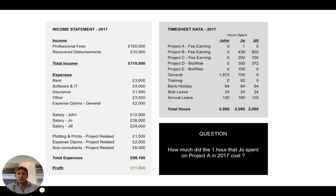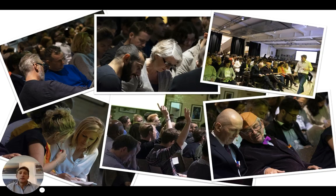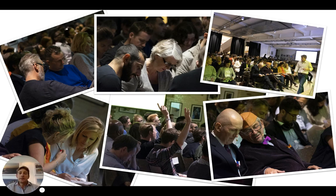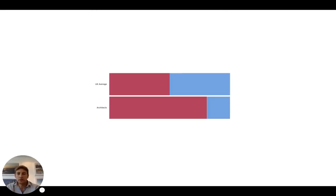The question was asked: how much did the one hour that Jo spent on Project A cost in 2017? The crowd was given about 15-20 minutes to calculate this, working in teams of two or three people — bright minds talking to each other. After 20 minutes, everyone had to submit their answers via app and we went through the solution.